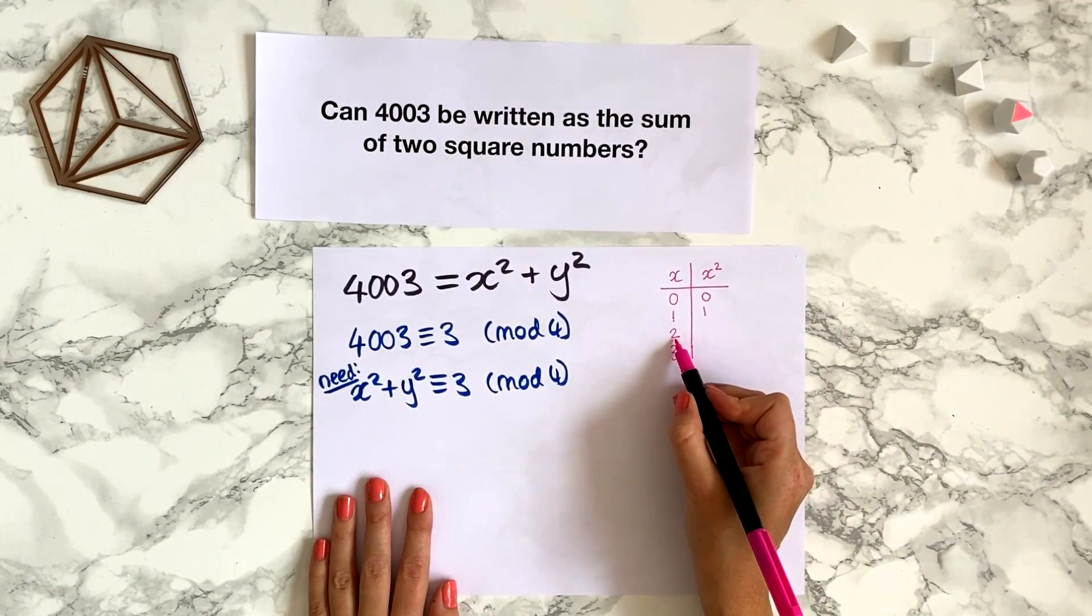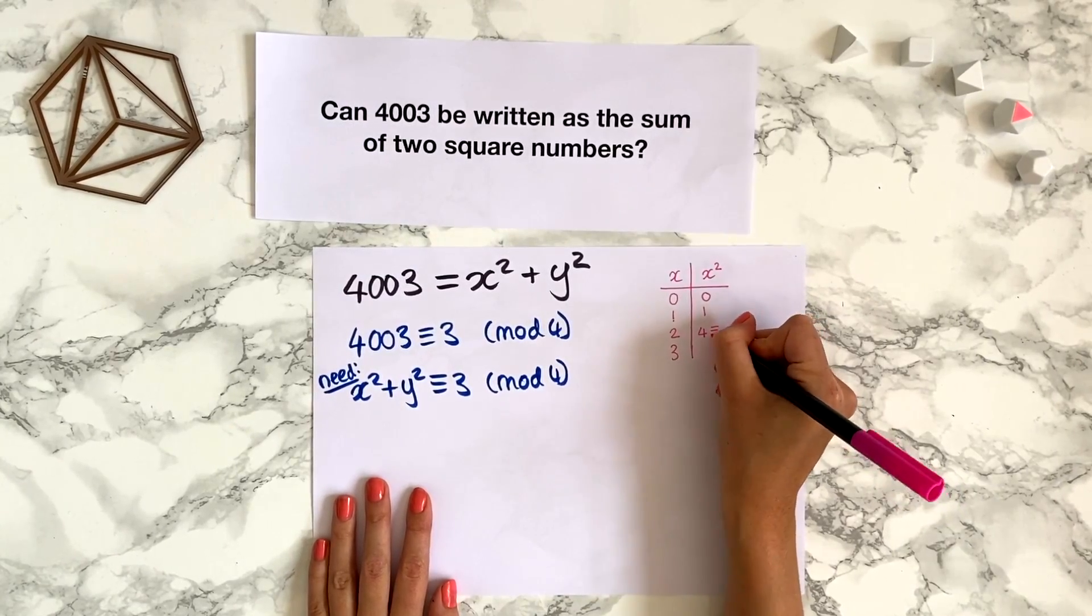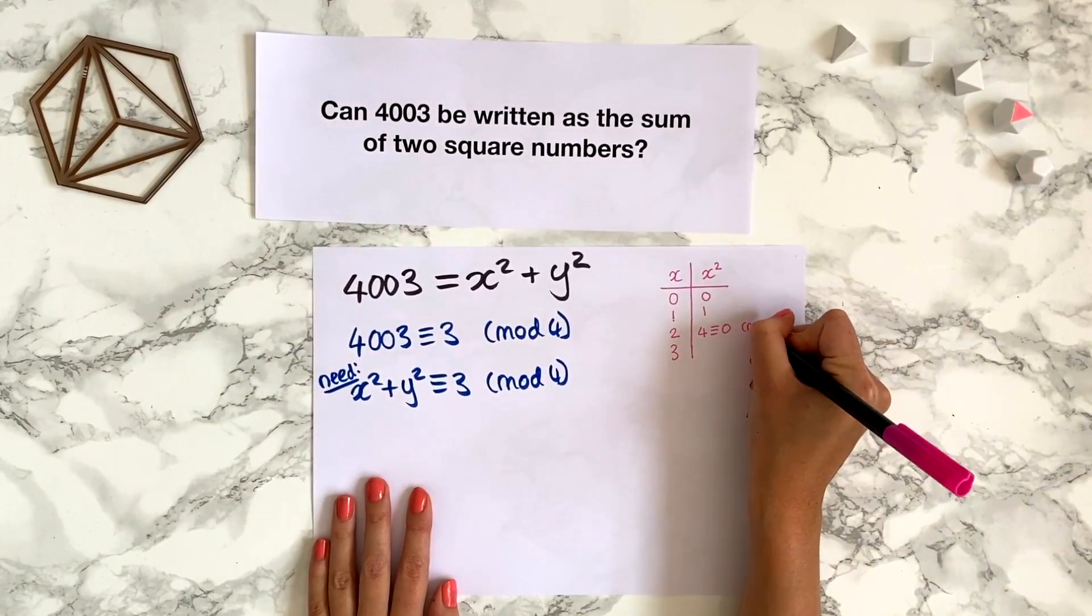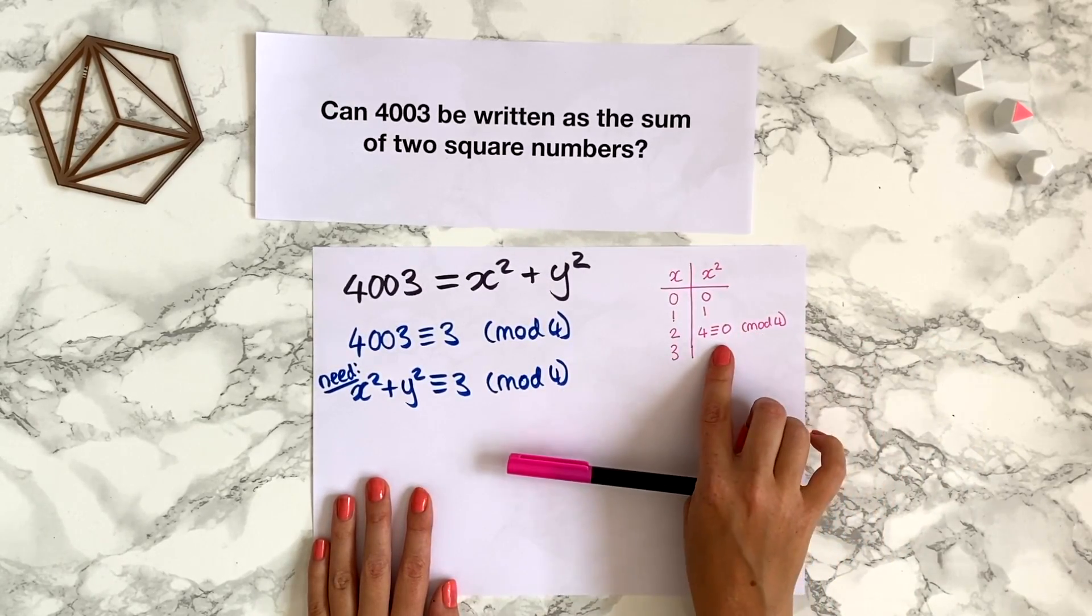If x is 2, x squared is 4, but that's congruent to 0 mod 4. So this is a modulo 4 table, everything we're going to reduce modulo 4.